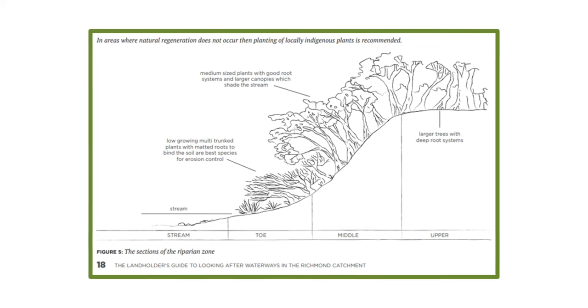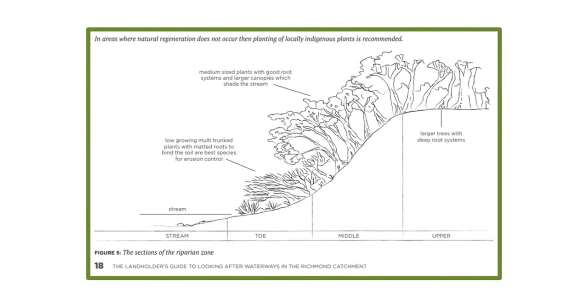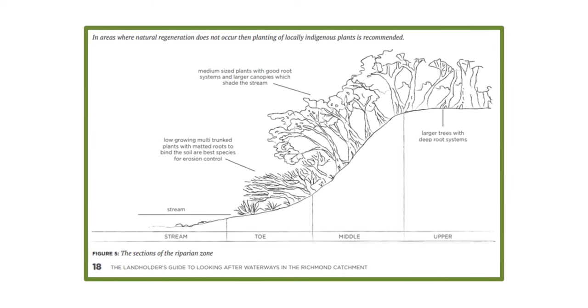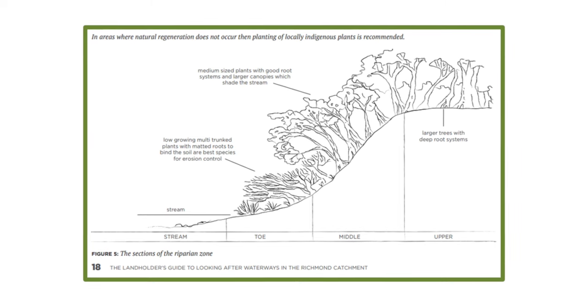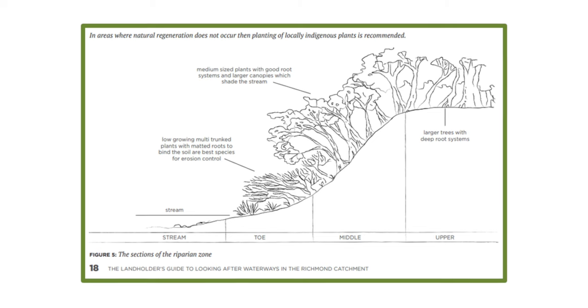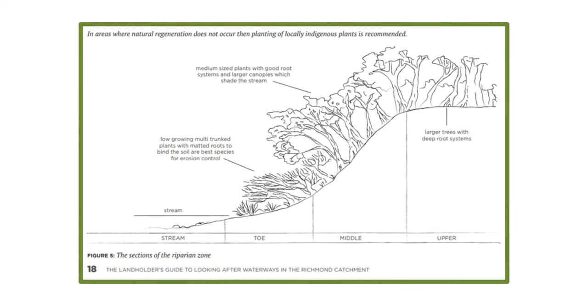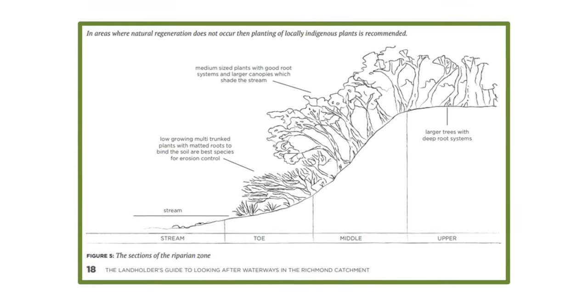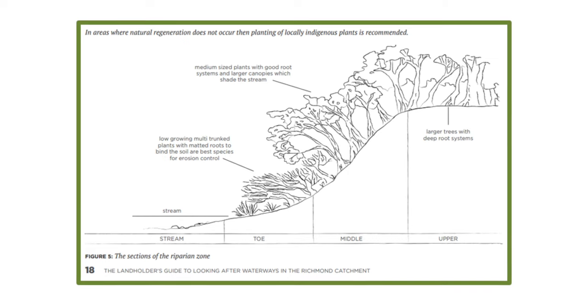You'll probably need a river practitioner to assess your site and help you make this decision. If there's no mature native trees nearby to provide seeds and you can't see many native seedlings starting to grow, it's good to revegetate. Scatter native grass seed over bare ground and plan for planting a mix of local native shrubs and trees of different heights in spring.